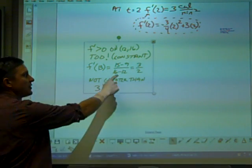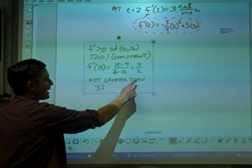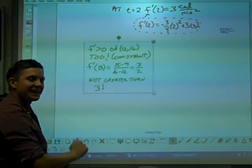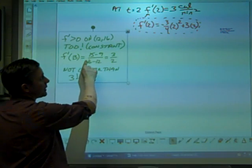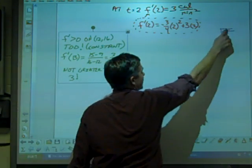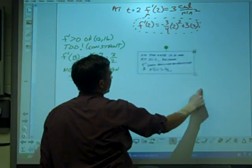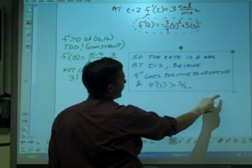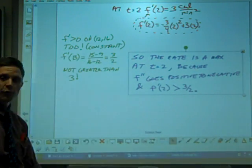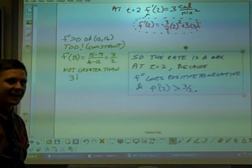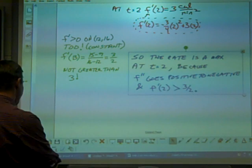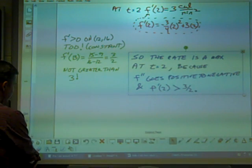F'(13), using the points again, just like method A, I find the slope is 3/2. That is not greater than 3. I have now proven F'(2) is the greatest rate of change. When it's increasing the most. So the rate is a max at T = 2 because F'' goes positive to negative, and F'(2) is greater than the slope of 3/2. And that should give you an answer of B. And again, we'll score these in class.